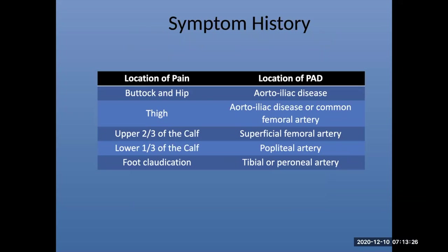In terms of symptom history — when you're working up these patients, if they have buttock and hip pain, you're classically thinking of aorto-iliac or inflow disease. Thigh pain suggests inflow disease, common femoral artery disease, or a combination of deep femoral and proximal SFA disease. Calf pain suggests SFA or femoral-popliteal disease. Foot claudication — pain, discomfort, and numbness in the foot with walking — is classically below-knee disease, though you must differentiate from arthritis, Achilles tendon issues, and plantar fasciitis.